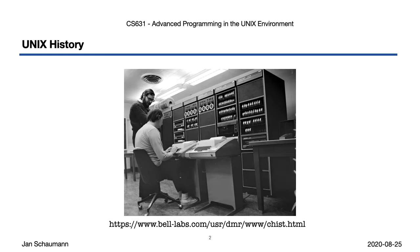The C programming language was developed in parallel by Dennis Ritchie, for and on UNIX, deriving from the B programming language developed by Ken Thompson for the new OS they wrote. Dennis Ritchie describes the history of the language and the operating system at the link shown here in the slides.